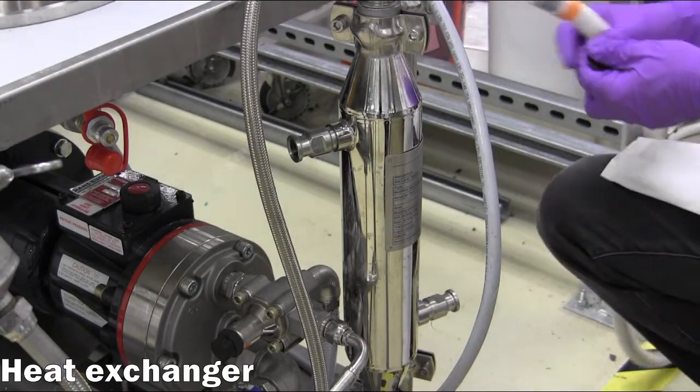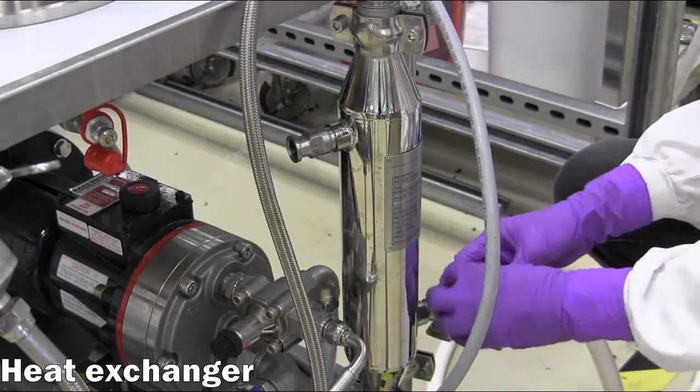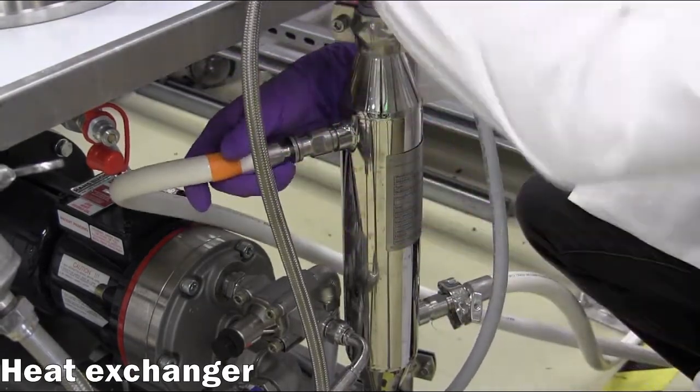Lastly, make the hose connections to provide chilled water to the heat exchanger, where the supply line is connected to the bottom side port, and the return line is connected to the top side port.